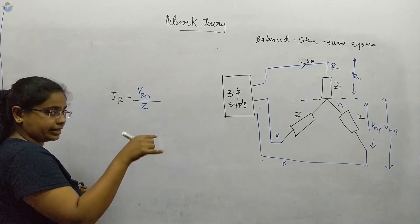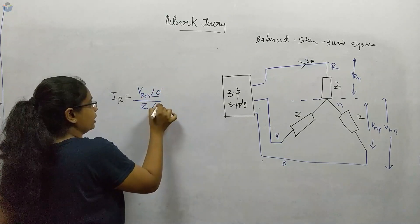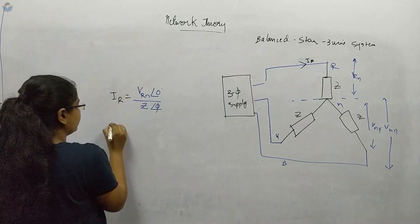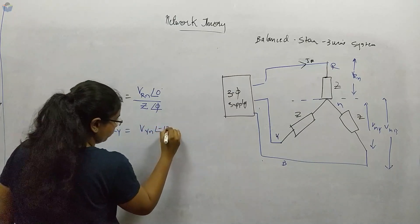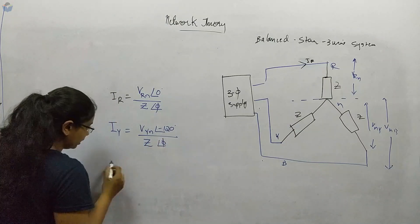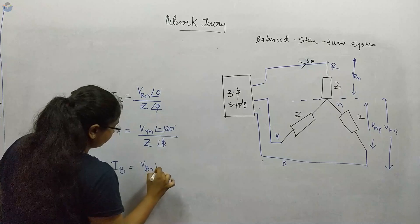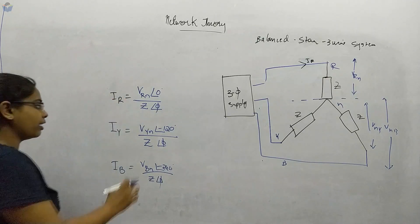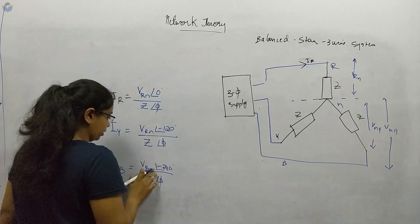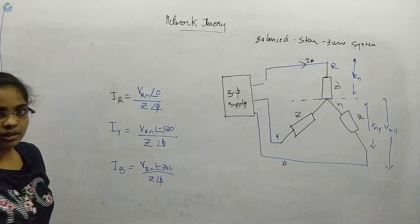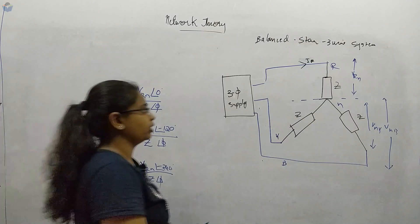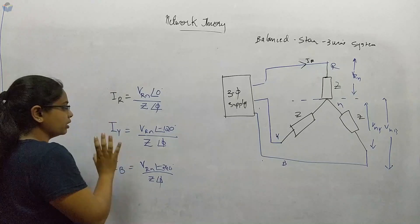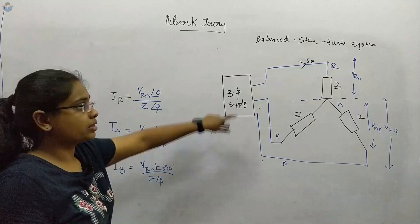Similarly, IY equals VYN at minus 120 degrees divided by Z∠φ, and IB equals VBN at minus 240 degrees divided by Z∠φ. If we write all three in terms of VRN, we just change the reference. IR, IY, and IB — the voltage, the impedance, and the phase current are all expressed in phase. This is how you calculate currents for the balanced star three-wire system.